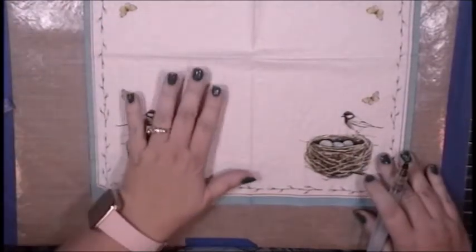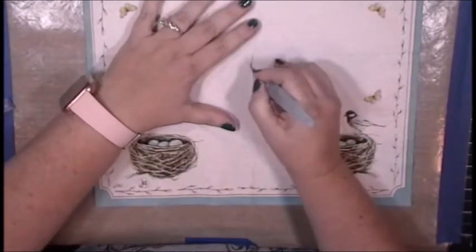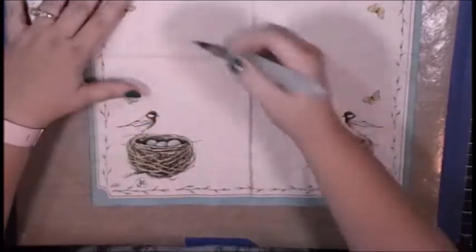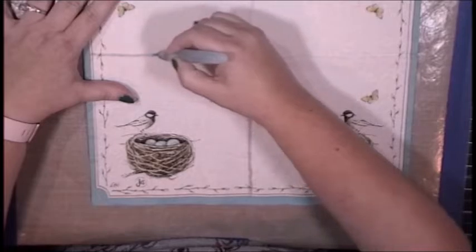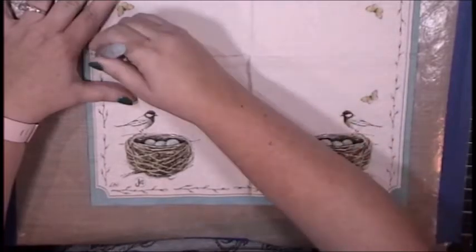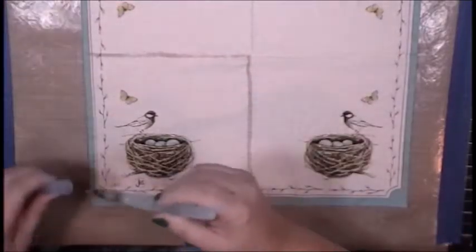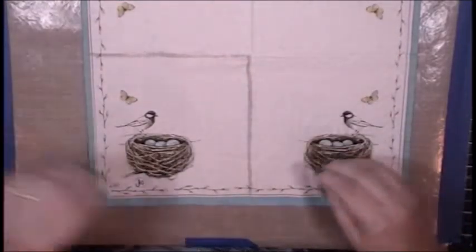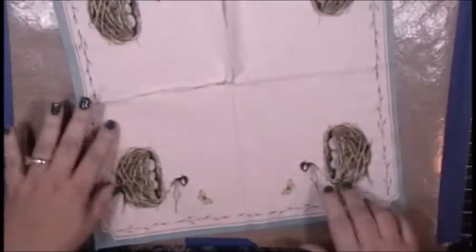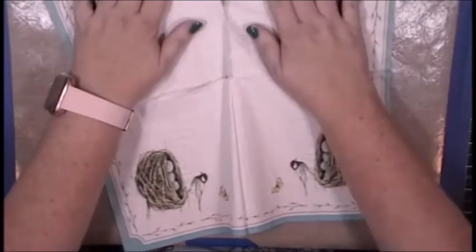I'm only using one fourth of this napkin, which means I have three other images I can use on another project. In order to separate this quarter, I am just going to take a little bit of water from my water brush and go along the fold lines. The napkin will pull right apart. This gives me a less perfect edge than I would have if I used scissors and it will make it easier to blend into the background.